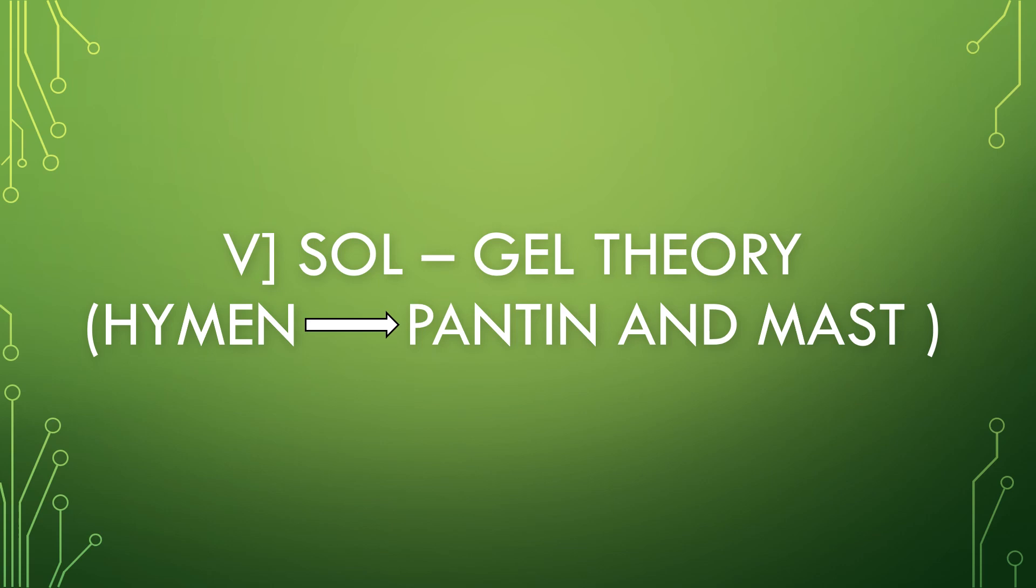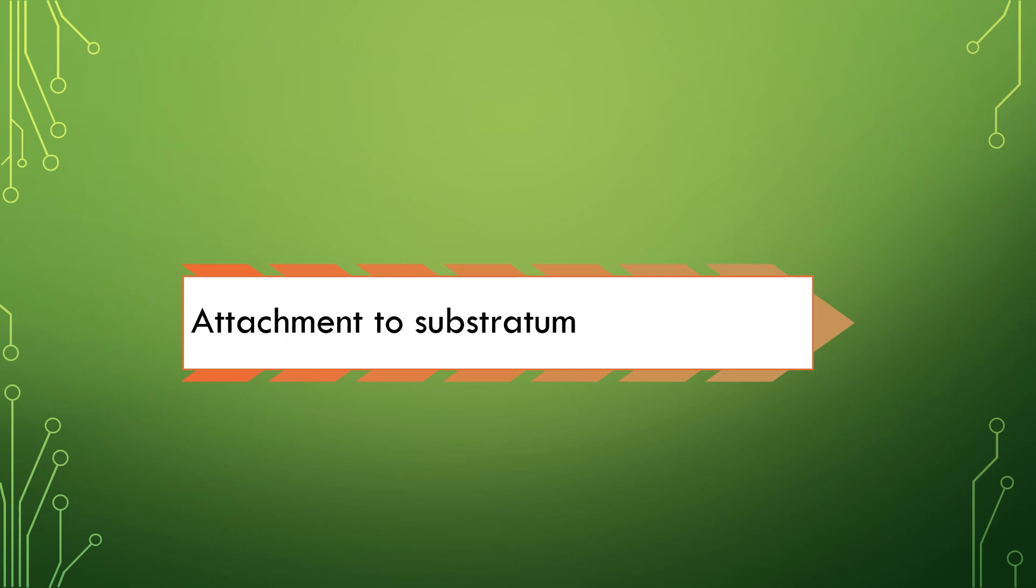The last theory is Sol-Gel Theory proposed by Hyman. Later, it is supported by Pantin and Mast. The plasmalemma is attached to the substratum. At the anterior end, the plasmagel is converted into plasmasol, which is called gelation. The plasmagel of the posterior end contracts. This produces a hydraulic pressure on the plasmasol located inside. As a result of the hydraulic pressure, the plasmasol is pushed forward as a small projection.